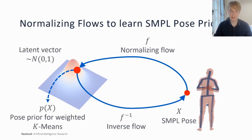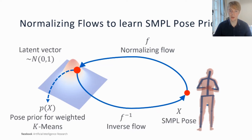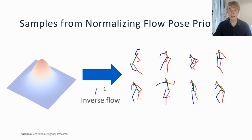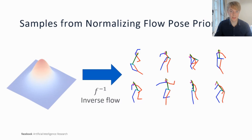A normalizing flow is a bijective neural network which maps a complex distribution, such as the space of 3D poses represented as SMPL skeletons, to a simpler distribution — in this case, a multivariate Gaussian. The prior is trained by plugging in our 3D pose vectors and maximizing the log likelihood in the Gaussian space, allowing us to express the likelihood of any new 3D pose. We can also visually check the quality of our pose prior by sampling points from the Gaussian space, passing them through the inverse flow function, and generating novel 3D poses.